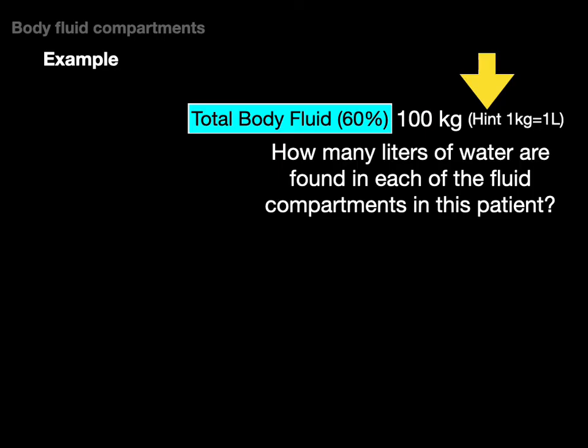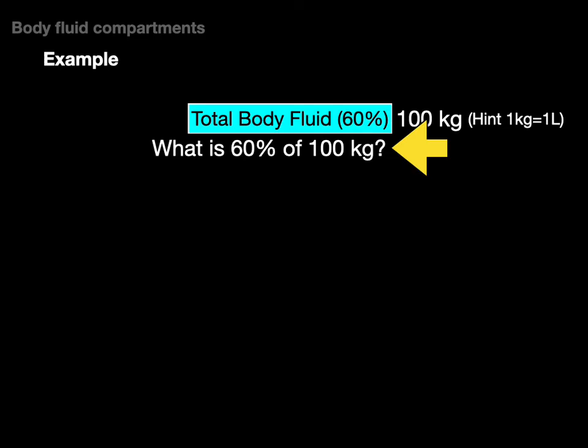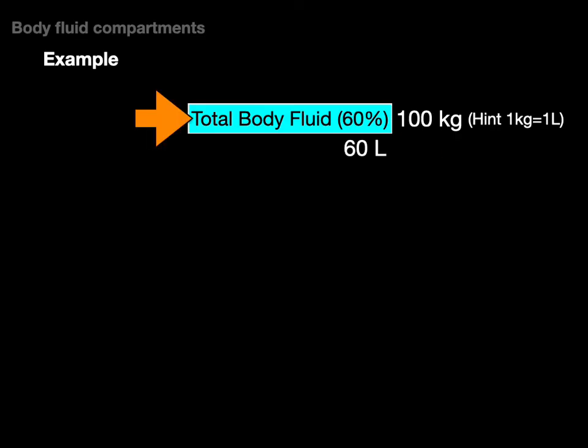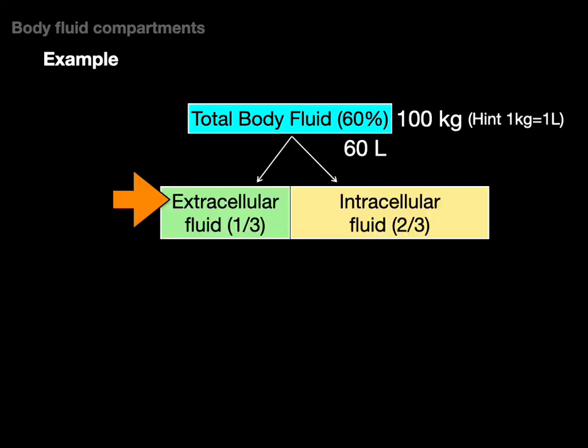Now, a hint, one kilo equals one liter. So what's 60% of 100 kilograms? 60 kilograms, which is now 60 liters of total fluid in this patient. So total body fluid, 60 liters.